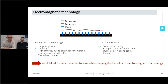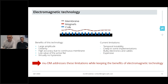The MuDM deformable mirror presented today is based on electromagnetic actuation. The mirror is made of a reflective, thin, flexible membrane that is typically silver-coated to be broadband. On this membrane are positioned a set of micro-magnets under the reflective parts, and in front of these magnets a corresponding set of coils. The idea is to send current through the coils so that the membrane will be locally pushed or pulled, and the shape of the membrane will be changed accordingly.